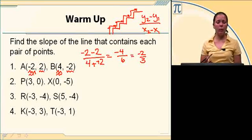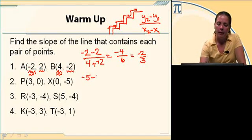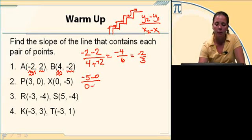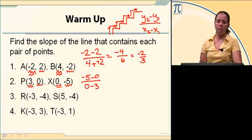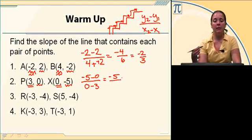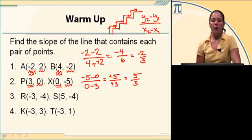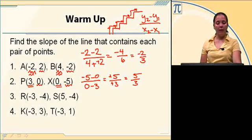Number 2, I've got the points 3, 0 and 0, negative 5. Find the change in Y's: negative 5 minus 0, over the change in X's, which is 0 minus 3. I put the Y's together and then the X's together. Negative 5 minus 0 gives me negative 5, and 0 minus 3 is negative 3. That becomes positive 5 thirds. So the slope in number 2 is up 5, right 3.